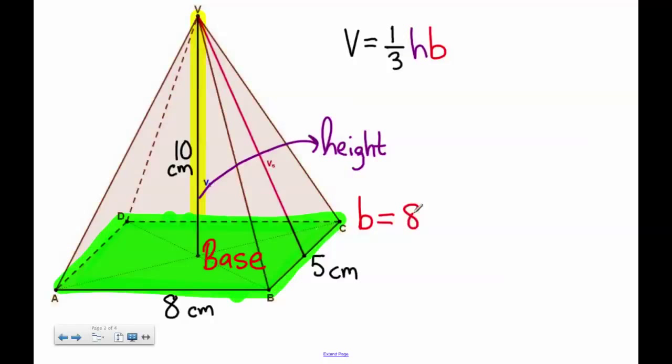To solve for the area of the entire base, you have to multiply the length times the width, which is 8 times 5, the two sides of the rectangle, which equals 40.